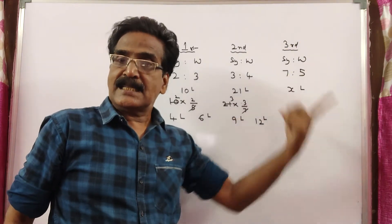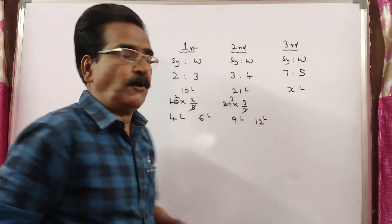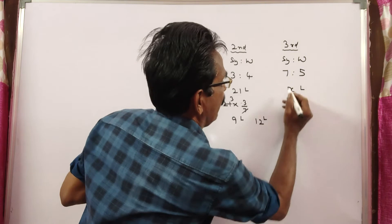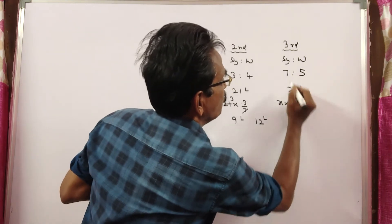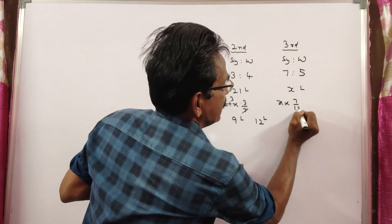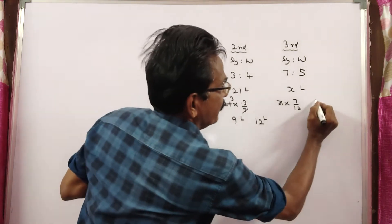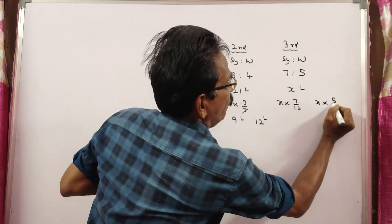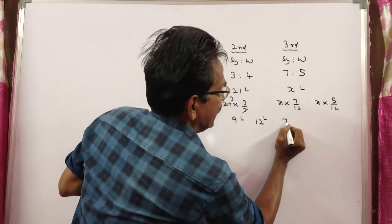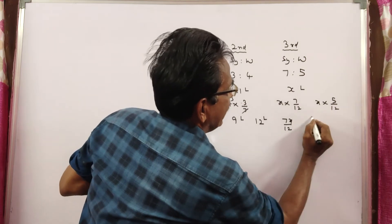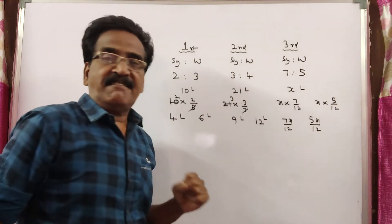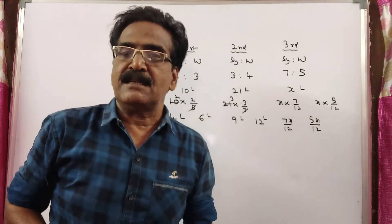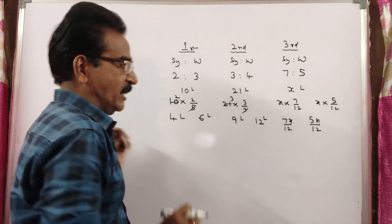Let us say x liters is drawn from the third bottle. How much syrup is drawn? x times 7/12 syrup is drawn, and x times 5/12 water is drawn. That is 7x/12 and 5x/12. Now it is said that in the final mixture, syrup and water must be equal.